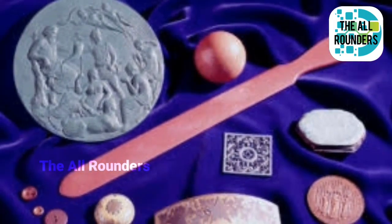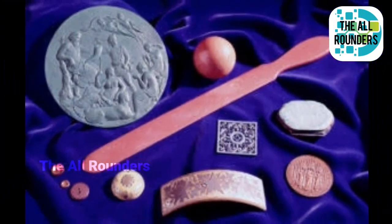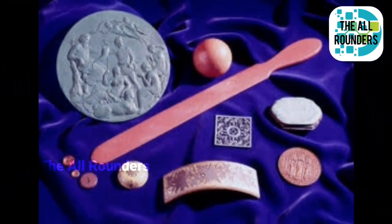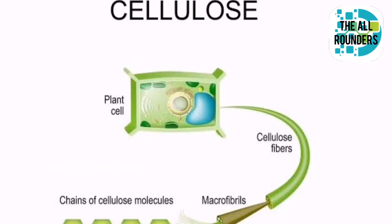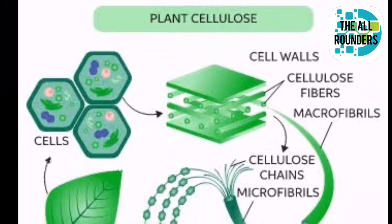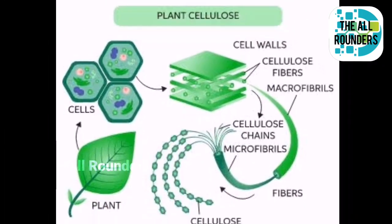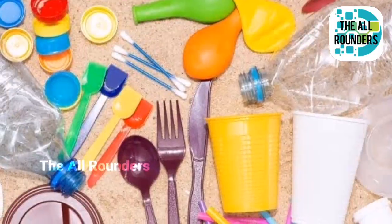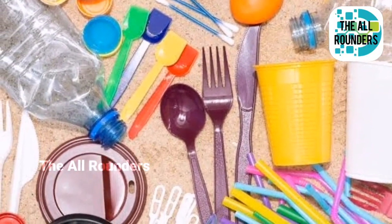The first type is Parkesine. This type was produced by Alexander Parker in 1862. He made it from cellulose, which is derived from plants. The main feature of this plastic was that it could take any form when heated.